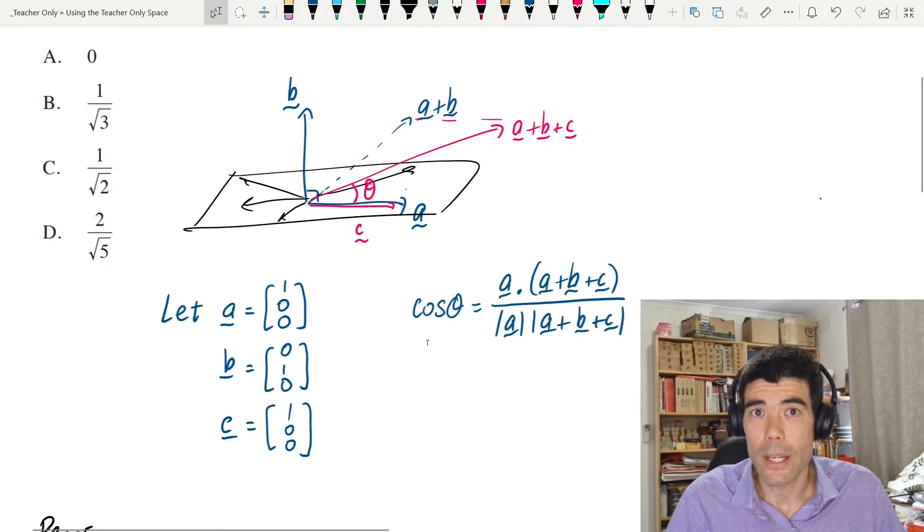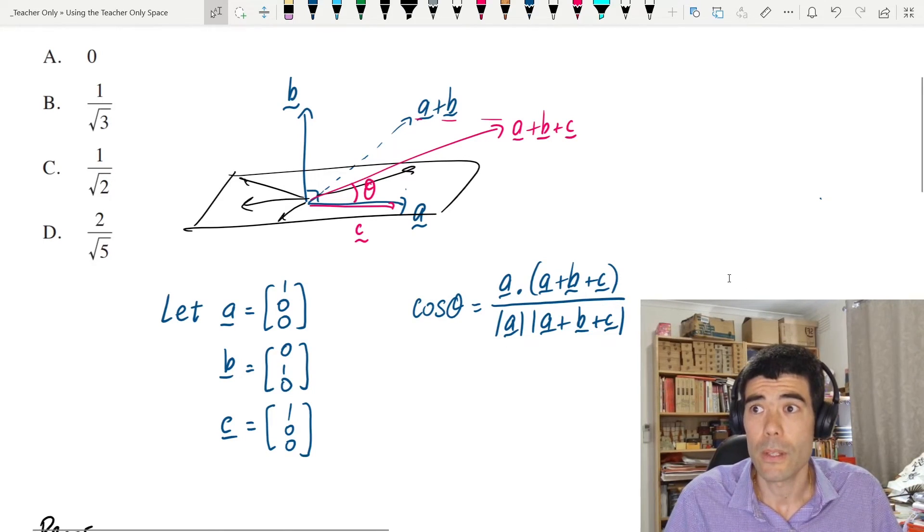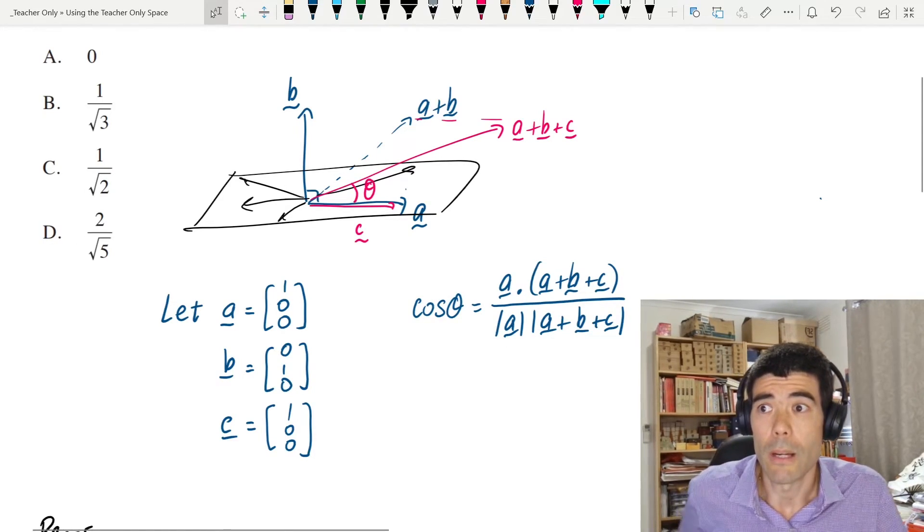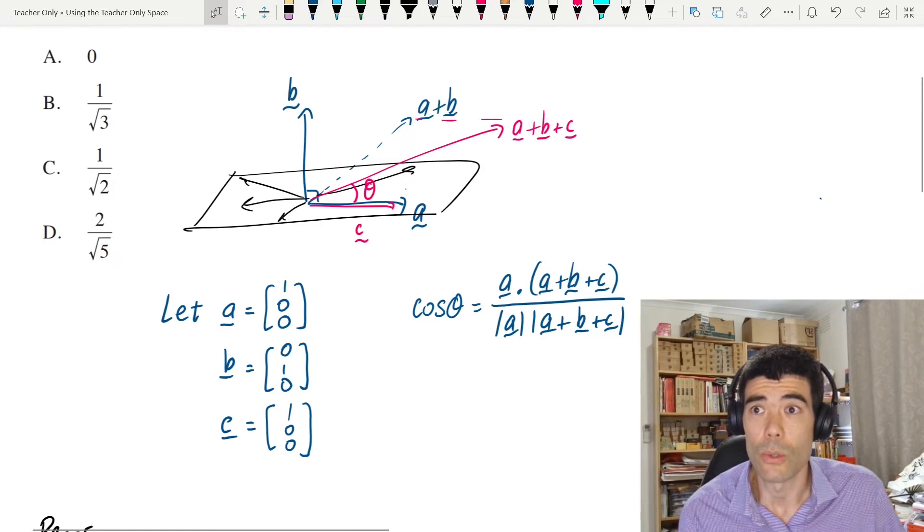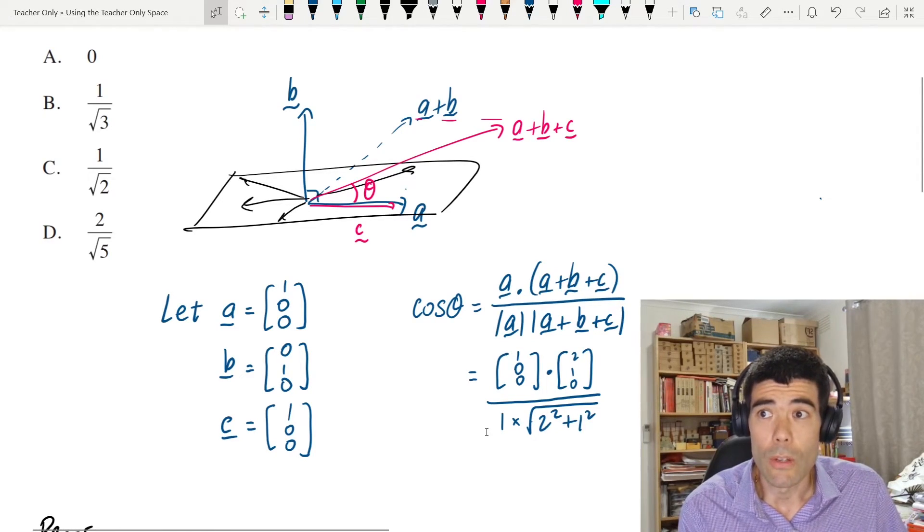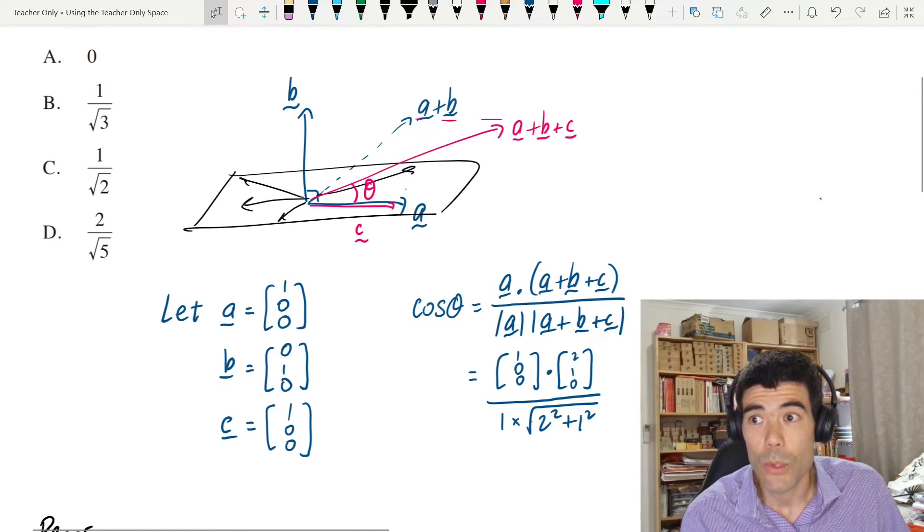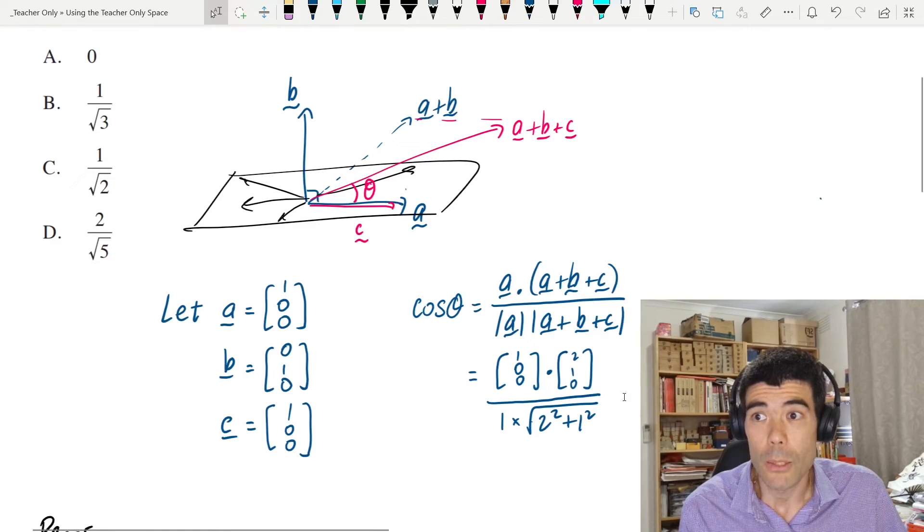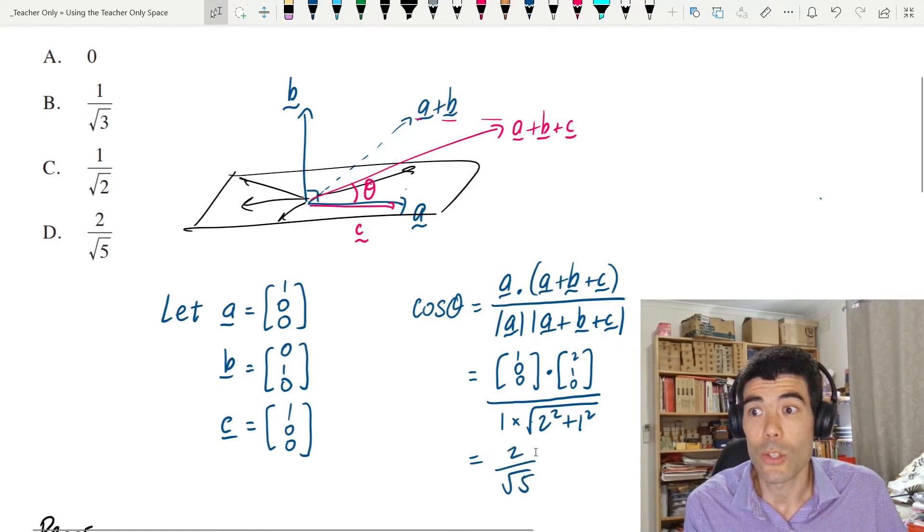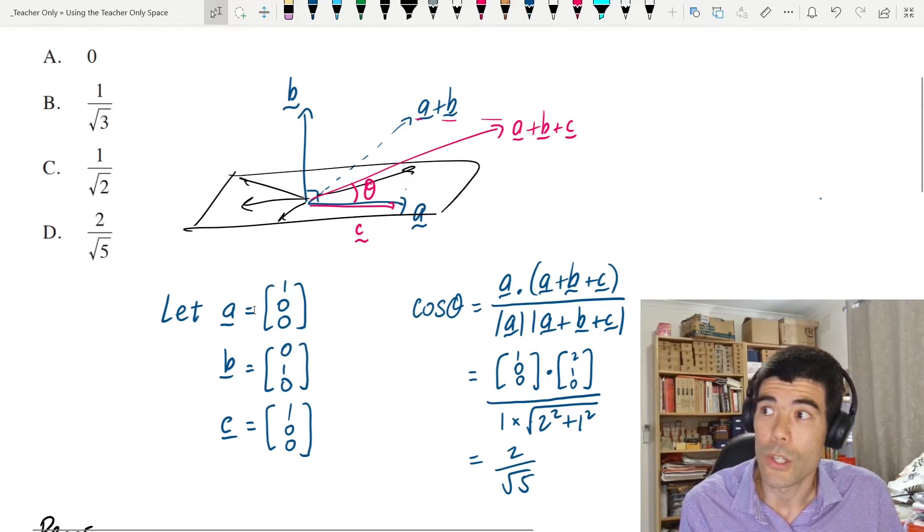So then cosine theta, using the scalar product formula, it's going to be this dot product divided by the product of these two lengths. On the bottom, length of a is 1 because it's a unit vector, and length of a plus b plus c is 2 squared plus 1 squared, which is square root 5. The dot product on the top is 2, so this gives 2 over root 5, which is option D here.